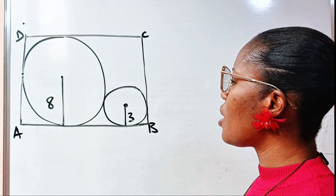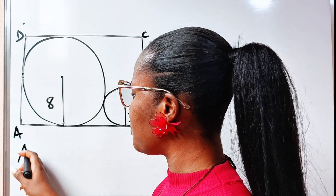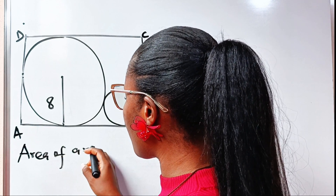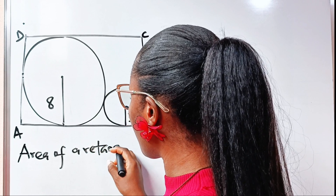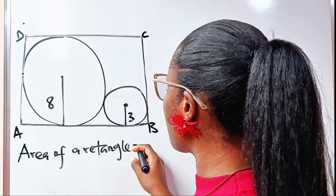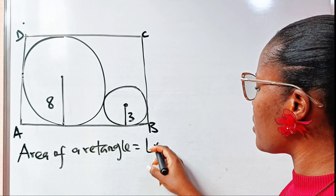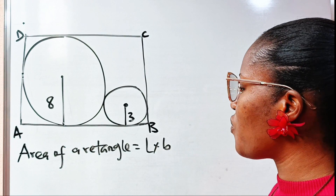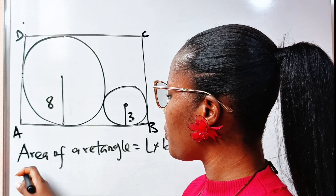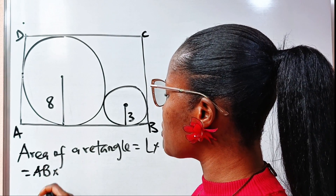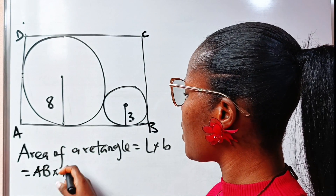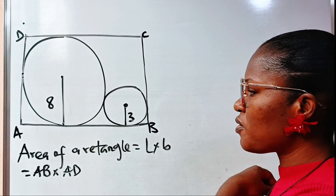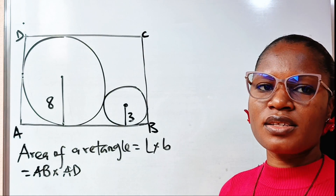The area of a rectangle is length times breadth. So if we can find the length of AB and multiply it by the length of AD, then we are done. Let us first try to find the length of AB.